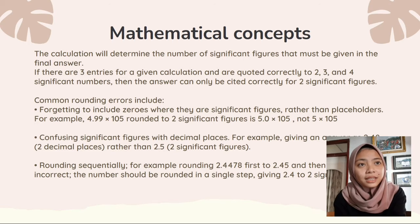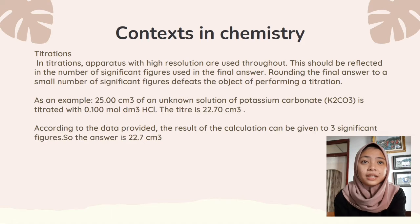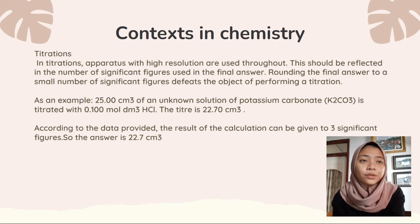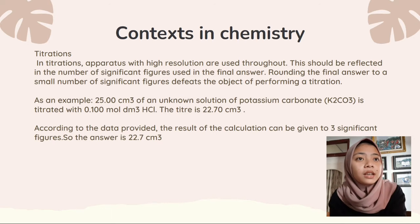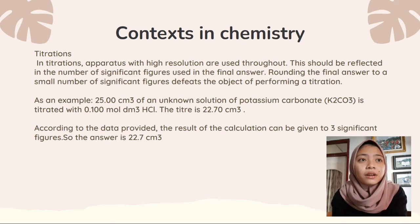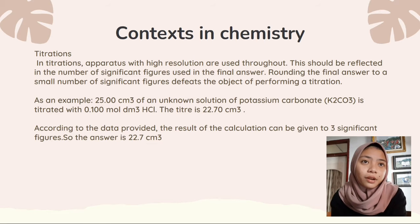The next is context in chemistry: Titration. In titration, apparatus with high resolution are used throughout. This should be reflected in the number of significant figures used in the final answer. Rounding the final answer to a small number of significant figures defeats the object of performing a titration.